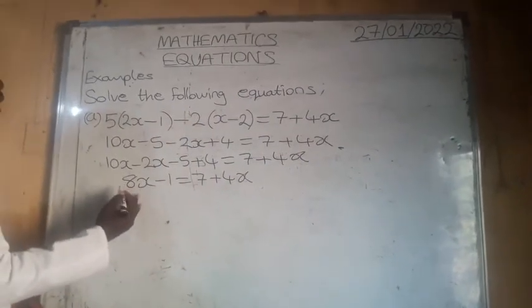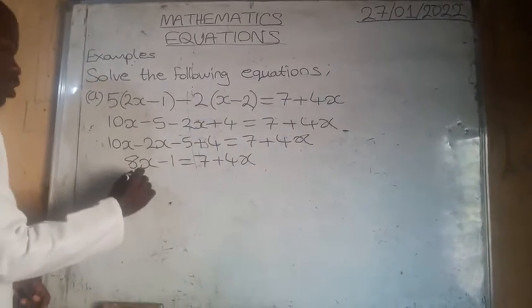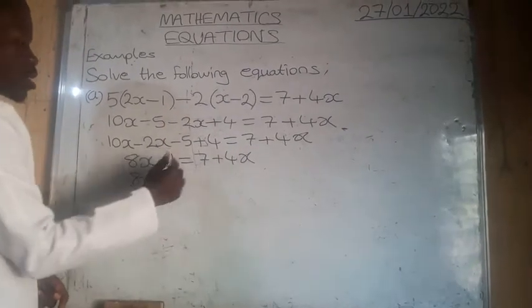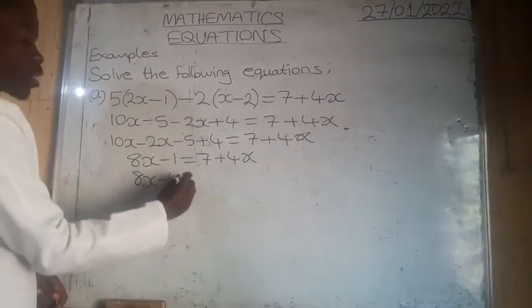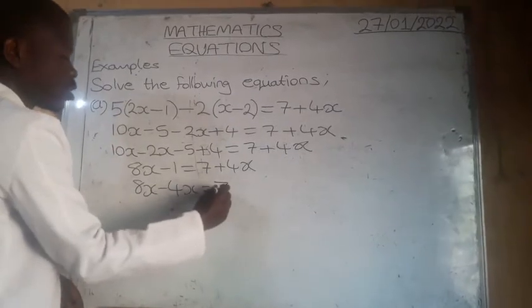So we shall group 8x and 4x. So 8x, when 4x crosses the equal sign, it will become negative 4x, which is equal to 7.